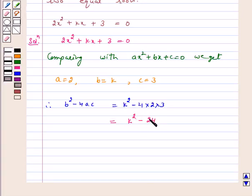Now, we know that for equal roots, the discriminant should be equal to 0. So, for equal roots, k² - 24 should be equal to 0.